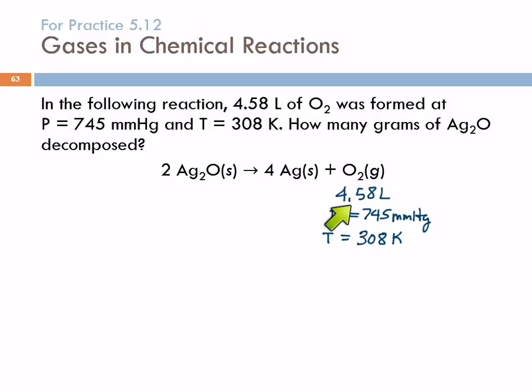So I'm given a volume of gas, of oxygen gas. So I'm going to write that under oxygen in the balanced chemical equation, 4.58 liters of oxygen. And then they're telling me what the pressure is and what the temperature is. So the pressure is equal to 745 millimeters of mercury, and the temperature is 308 Kelvin. What's the letter label for 4.58 liters? V. So that's the volume. And then what are they asking? How many grams of silver oxide decomposed? So question mark grams.